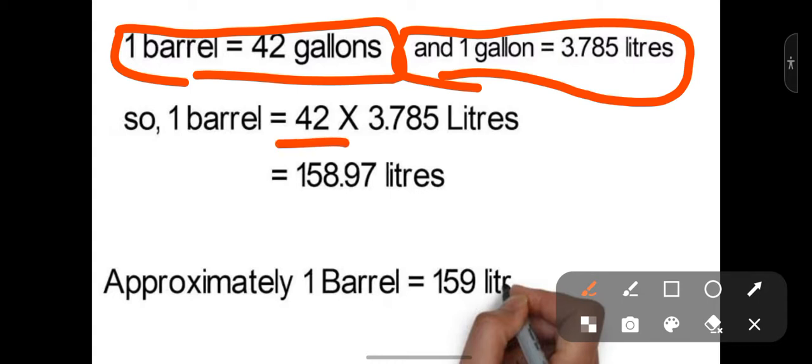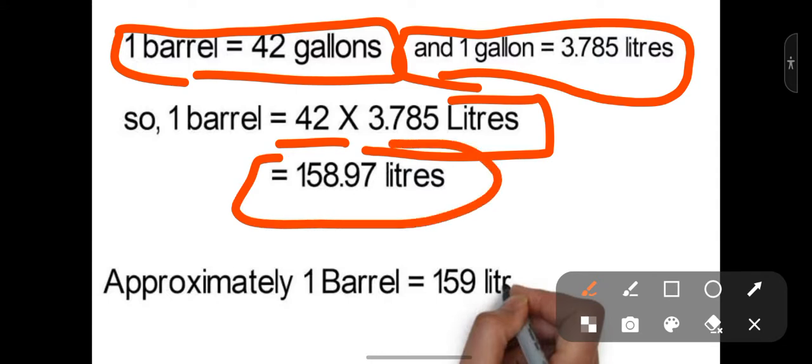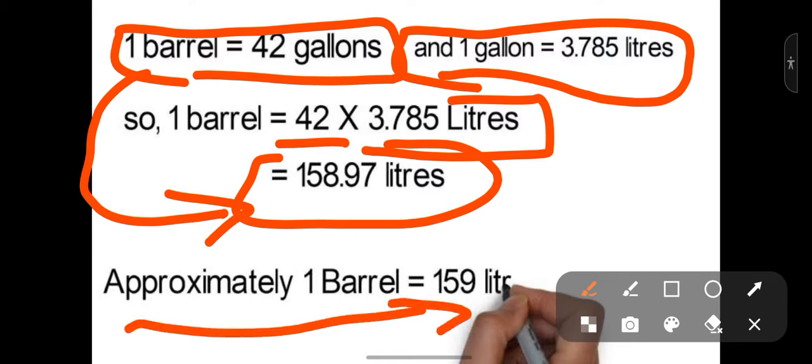This gives us 158.97. So one barrel contains 158.97 liters, which is approximately equal to 159 liters.